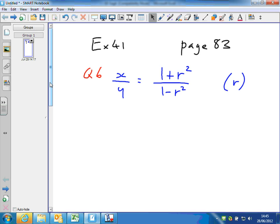Multiply first of all by the term 1 minus r squared, both sides, to get rid of that on the right hand side. And then multiply again by y to get rid of the y on the left hand side. So multiply through by y and 1 minus r squared. See what you end up with and then go from there.